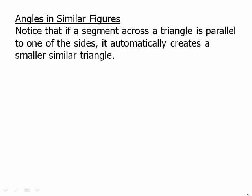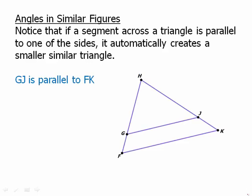Notice that if a segment goes across a triangle and is parallel to one of the sides, it automatically creates a smaller, similar triangle. So if GJ is parallel to FK, that means triangle HFK, the larger triangle, is similar to triangle HGJ, the smaller triangle. And the angles would be equal in both. Obviously, they both share the same angle at H. But angle HGJ would have to be equal to angle HFK.